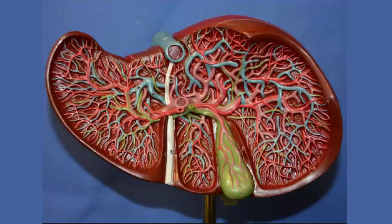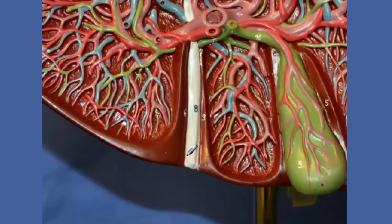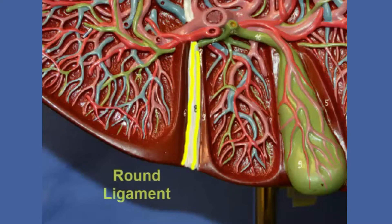Here is our liver model. We are looking at the underside of the liver, where the surface tissue has been removed to give you an interior view of the blood vessels and bile ducts within the liver. Right over here we have the remnant of the umbilical vein, number eight in this model, and this is the round ligament, also known as the ligamentum teres. It is outside of the liver itself.